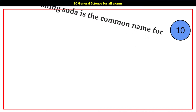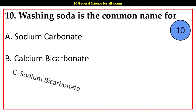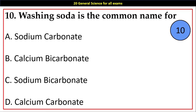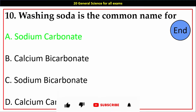Question number 10. Washing soda is the common name for: Options A. Sodium Carbonate, B. Calcium Bicarbonate, C. Sodium Bicarbonate, D. Calcium Carbonate. Answer: A. Sodium Carbonate.